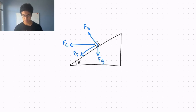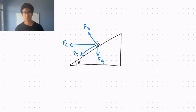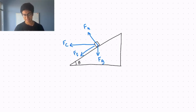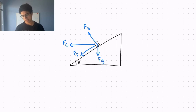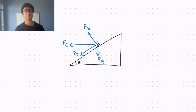In our example, the centripetal force Fc is acting to the left. Any forces with horizontal components acting to the left contribute to the centripetal force. The gravitational force acts directly down with no horizontal component. The frictional force has a horizontal component acting to the left, and the normal force also has a horizontal component acting to the left. It is the addition of these two horizontal components that results in the centripetal force and allows the object to travel in circular motion.